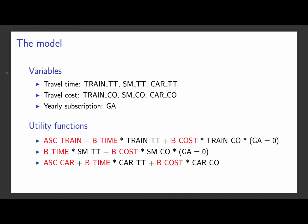We have four parameters to estimate: ASC_train, ASC_car, B_time, and B_cost.